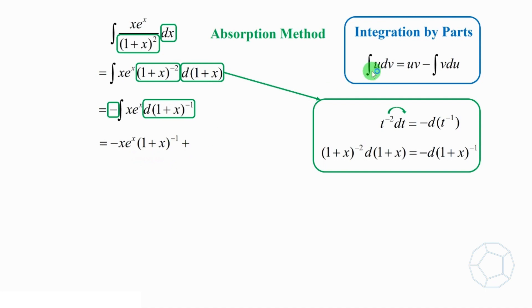The second term is the integral by swapping u and v, which is integrate 1 plus x to the power of negative 1 d bracket x times e to the power of x. Be careful about the sign of the integral, because we have a negative sign in the previous step, and another negative sign is from integration by parts, so 2 negatives gives a positive.